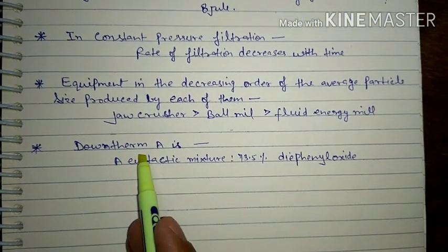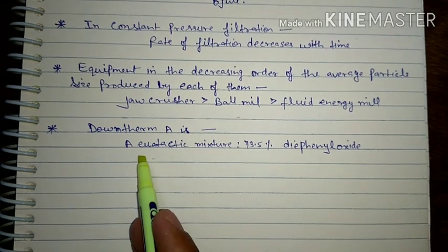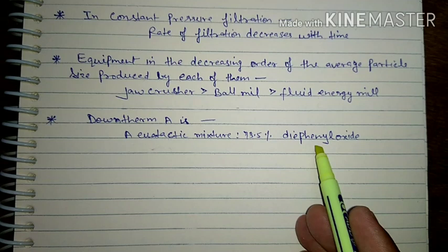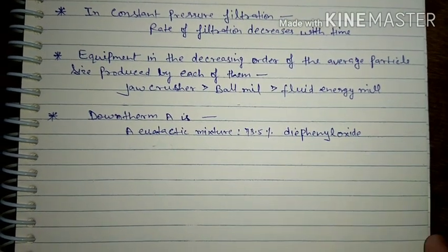Next question: Dowtherm A is a eutectic mixture that is 73.5% diphenyl oxide. Okay, thank you.